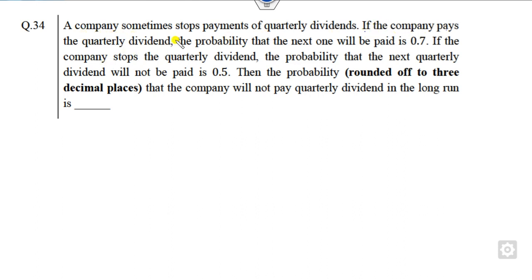If the company pays the quarterly dividend, the probability of the next day. So whenever the thing which is related to the previous day and the next day or change from to this, then that question is solved with the help of Markov chain. So whenever there is a Markov chain, then you have to write firstly the transition probability matrix.